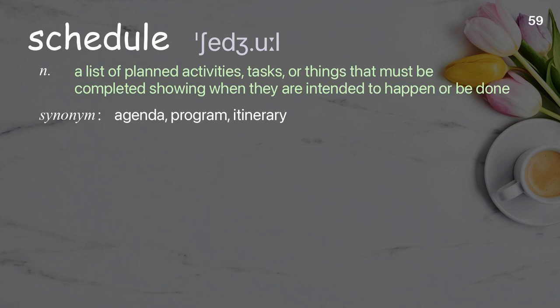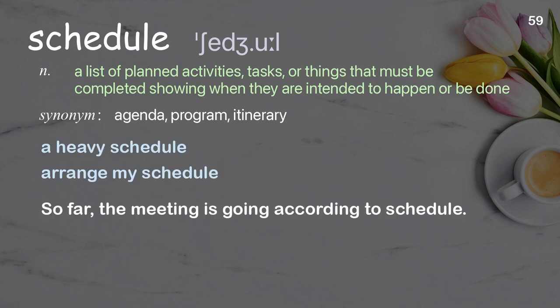Schedule: A list of planned activities, tasks, or things that must be completed, showing when they are intended to happen or be done. Examples: a heavy schedule, arrange my schedule. So far the meeting is going according to schedule.